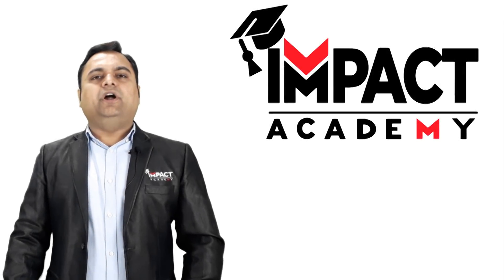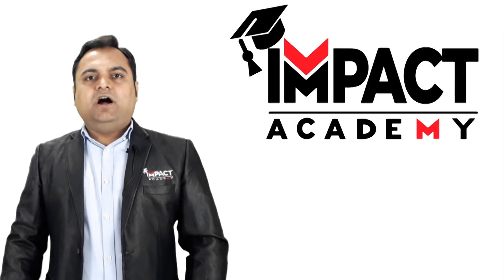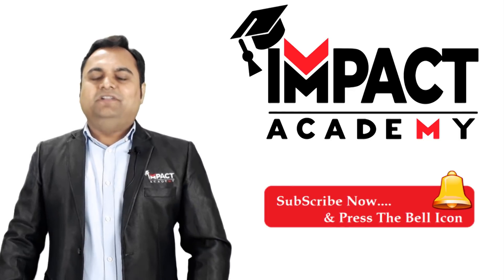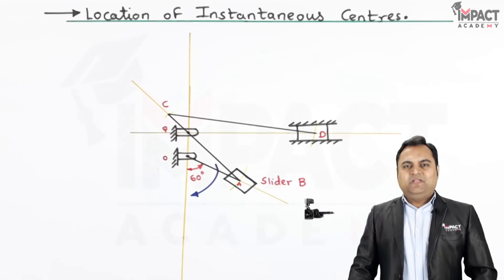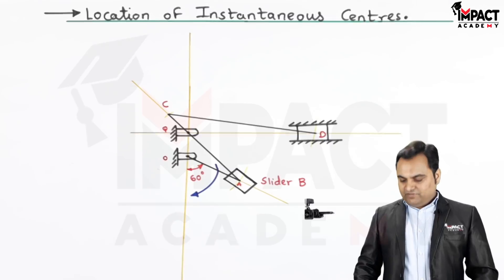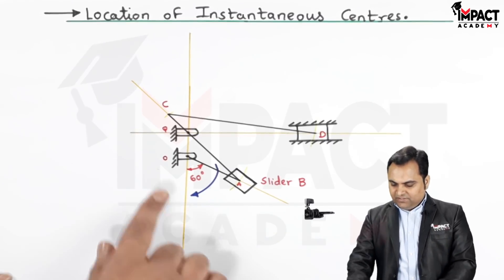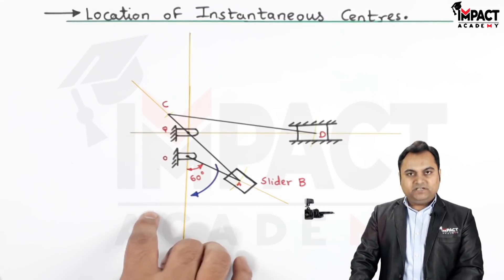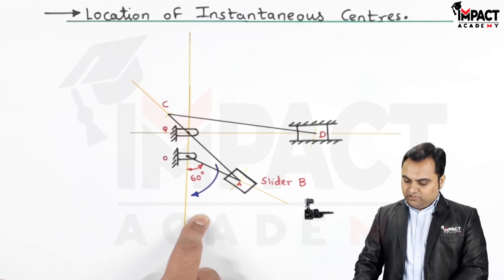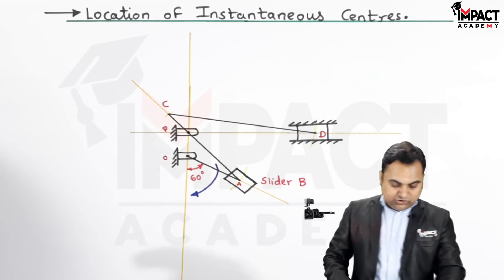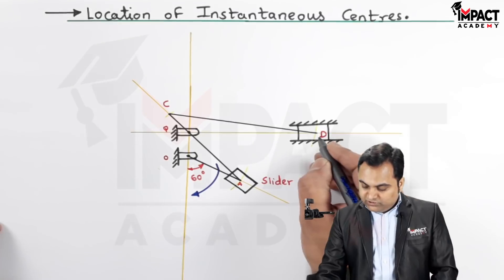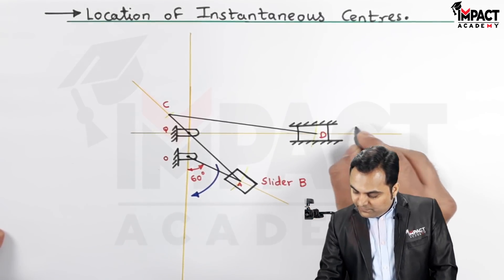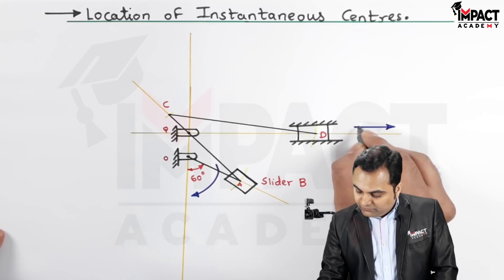Hi friends, in this video we are going to see how to locate the various instantaneous centers. Here is a mechanism where crank OA rotates in a clockwise direction, and the motion is transferred to slider D, or piston D, which reciprocates in a horizontal plane.